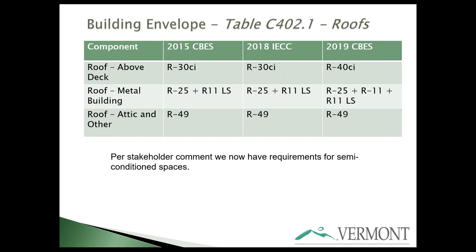This is the current code being phased out, this is what the national model code suggested for our climate zone, and this is what is being proposed for the 2019 CBS. Semi-conditioned spaces are also included now, which came directly from stakeholder feedback in the early stages of this code update. Above-deck insulation has moved up considerably from R30 continuous to R40 continuous.